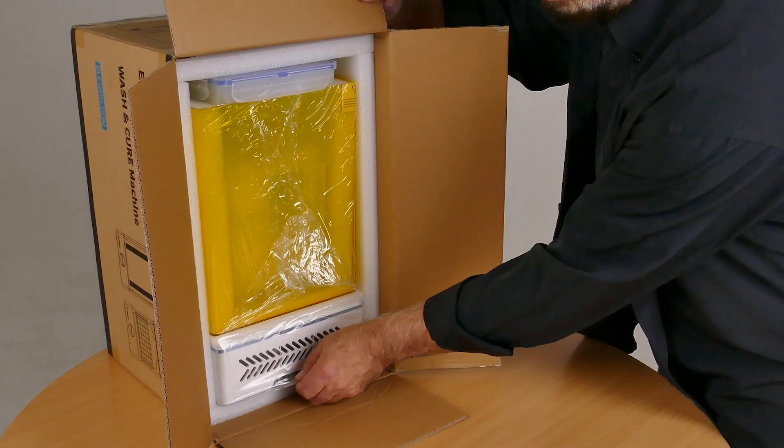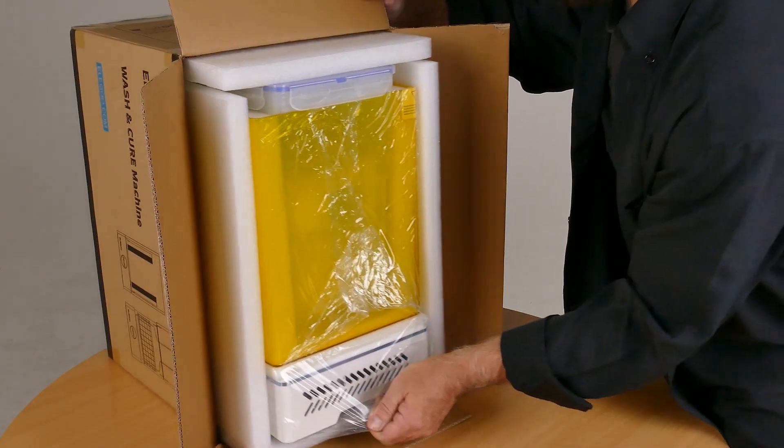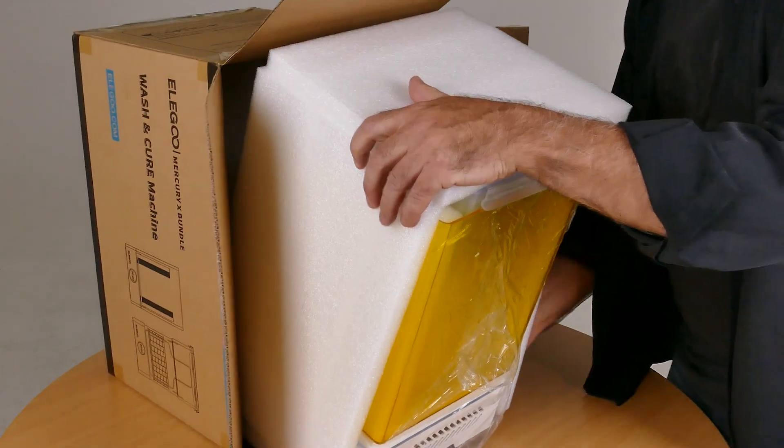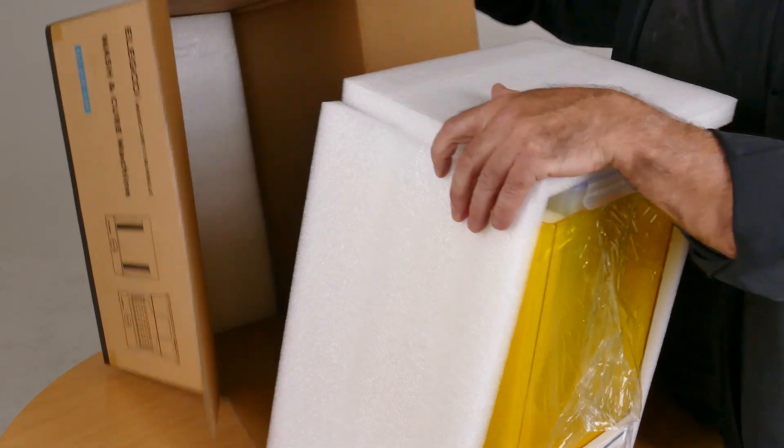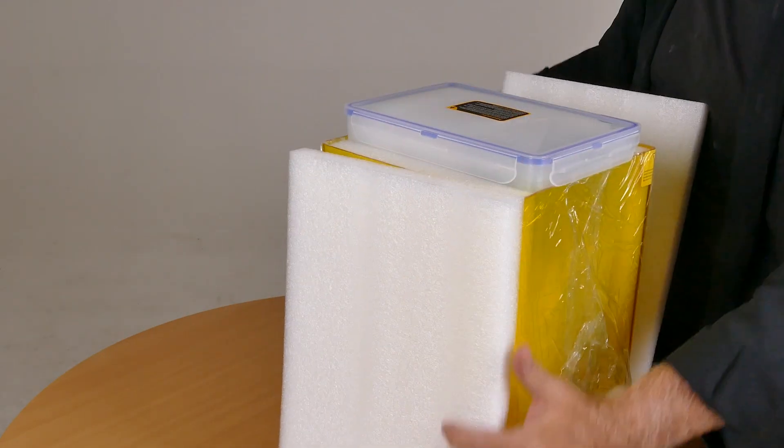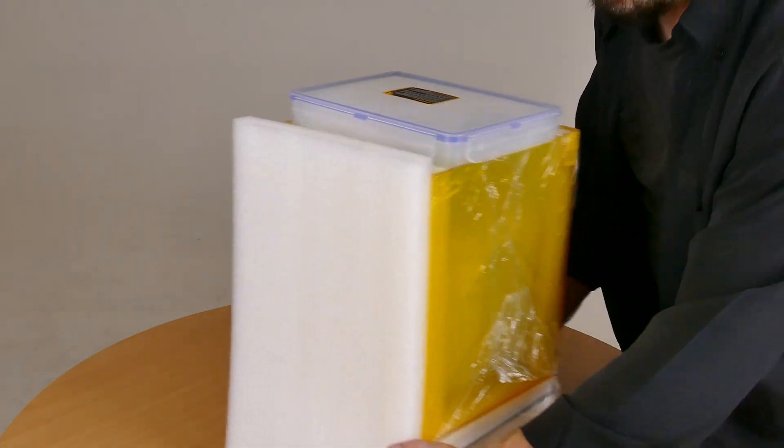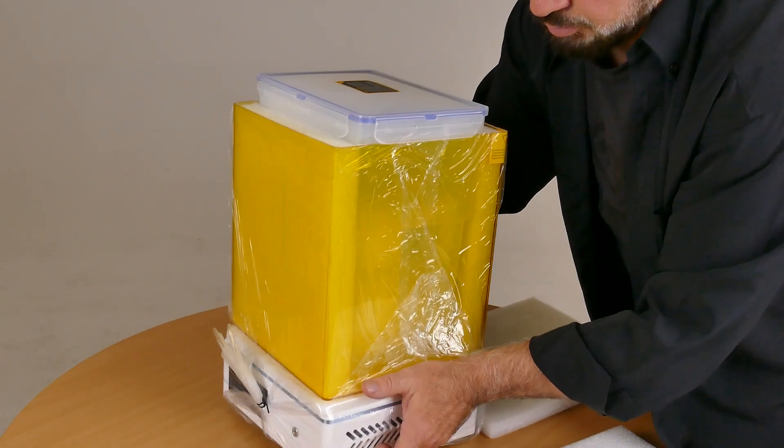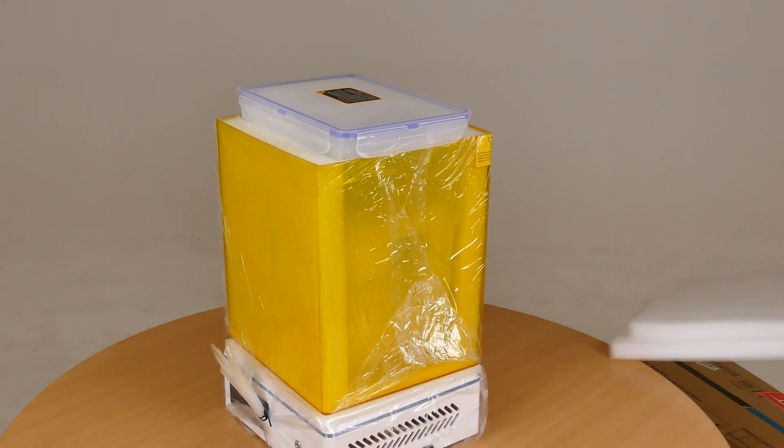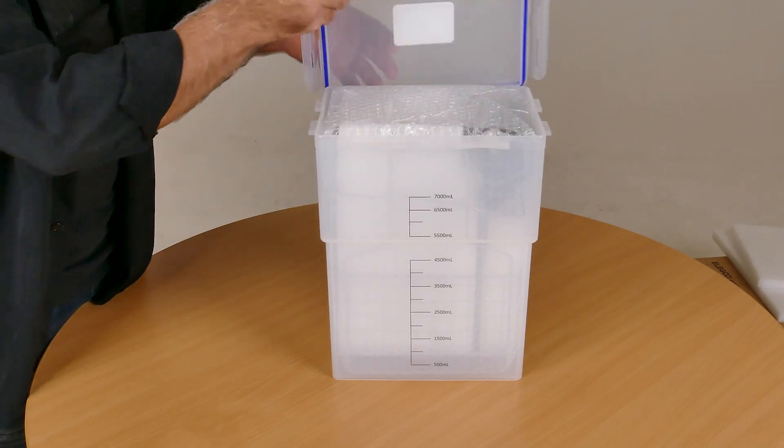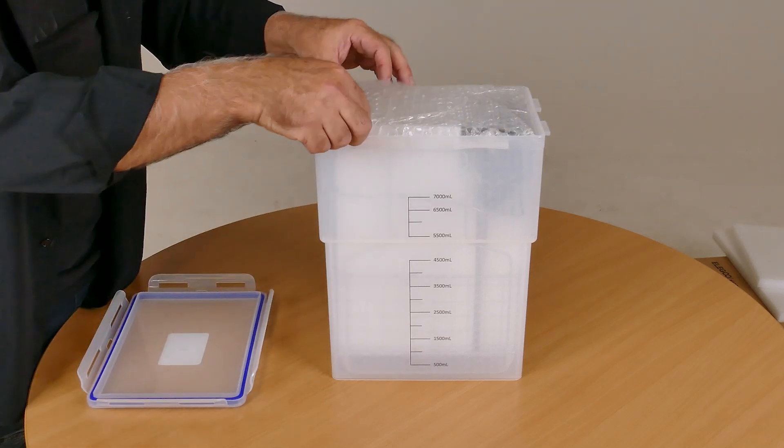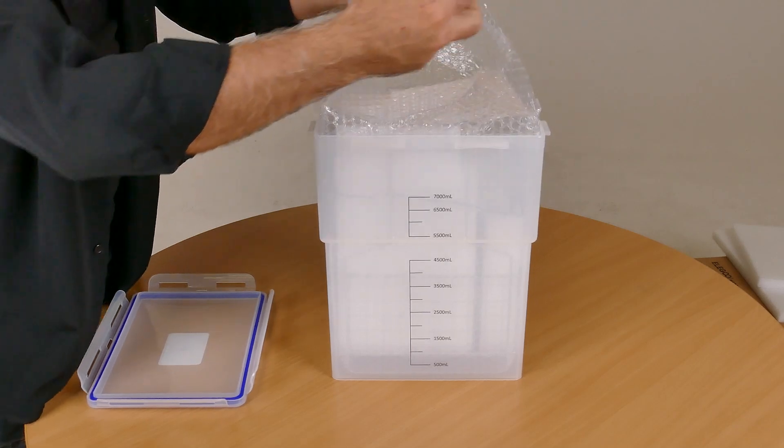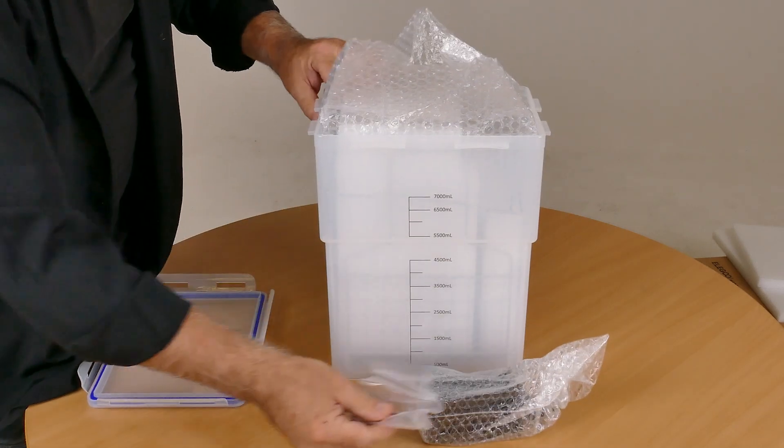First thing I noticed as I slid the machine out of its packing box is how big it actually is. This curing machine is more than enough to be able to print anything that comes out of the Mars 4 Ultra. The wash machine bucket is just sticking out of the lid. This bucket is seven liters so it can hold quite a fair bit of IPA.